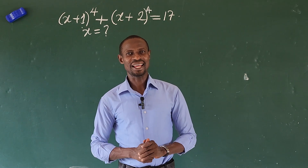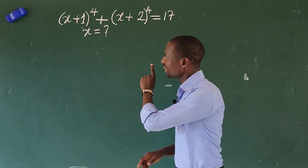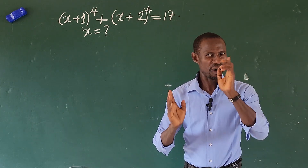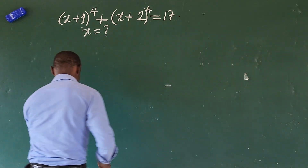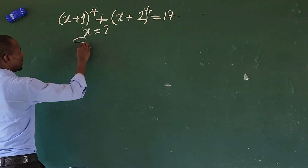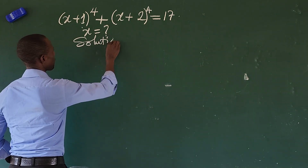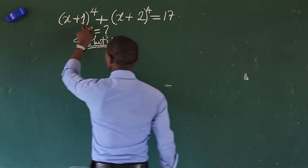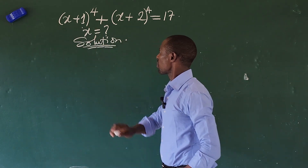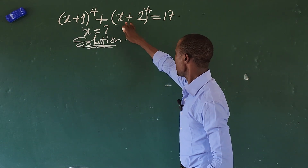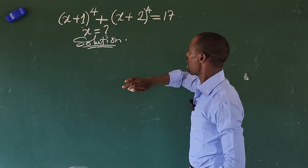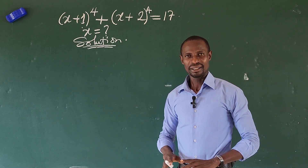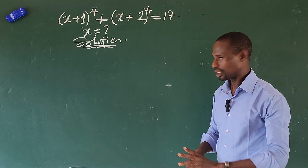Hello, welcome to today's class. Let's look at this math challenge together and see if it can be solved or not. So we take our selection here. Look at the question: bracket (x plus 1) plus bracket all raised to power 4, plus bracket (x plus 2) plus bracket raised to power 4, equal to 17. What then is the value of x that will satisfy this challenge?